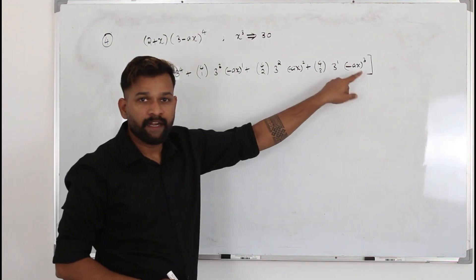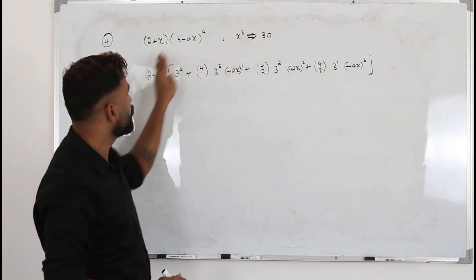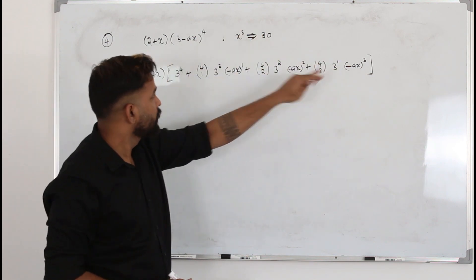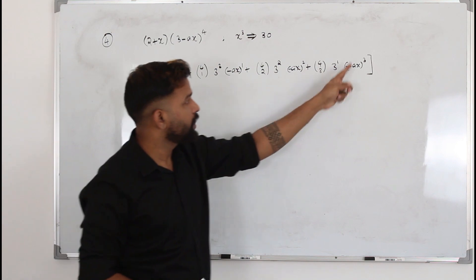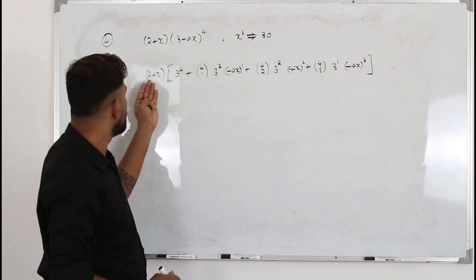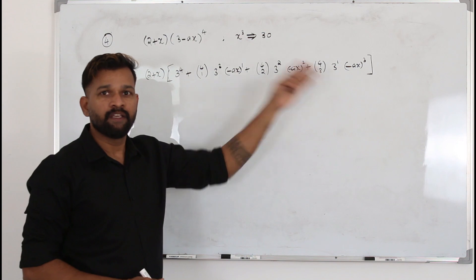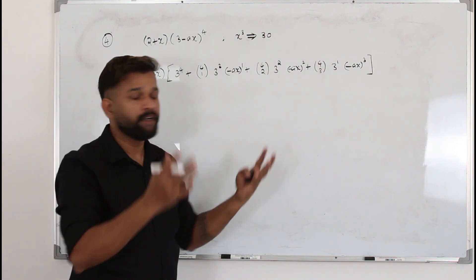I'm going to stop right here at x³ because even after you multiply, you will get x³ terms. If you take the next term, it's x⁴. Even when you multiply by this, you will get x⁴ only. We don't need that.